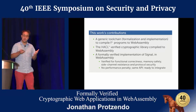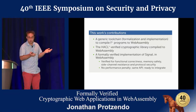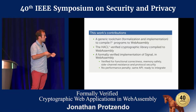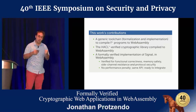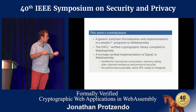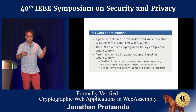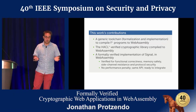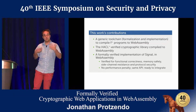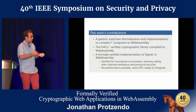We have applied this toolchain to an existing project, namely the HacklStar High Assurance Crypto Library, which means that now you can use HacklStar on WebAssembly for all of your cryptographic needs in a web environment. We also wrote a formally verified implementation of the Signal protocol in F-star and compiled it to WebAssembly. This implementation is verified for functional correctness, memory safety — the WASM code is not going to crash with an out-of-bounds error — side channel resistance, and protocol security. There is no performance penalty, and our implementation is ready to integrate if you're already using Signal, because it offers the same API.